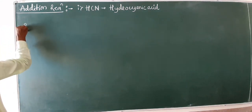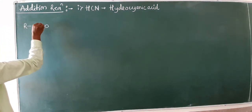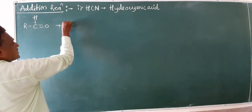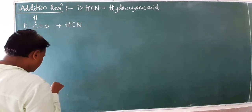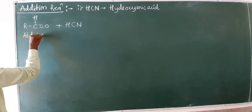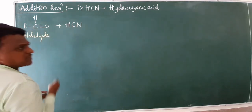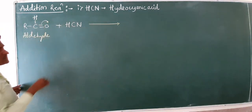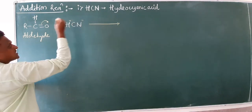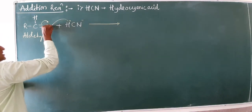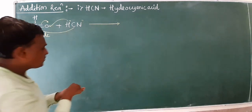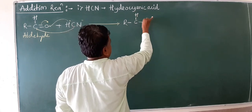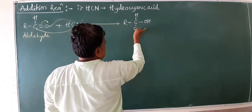We have a very simple addition reaction. When aldehyde reacts with HCN — hydrogen cyanide — this pi bond is cleaved. H⁺ and CN⁻ are generated; the CN⁻ comes to the carbon and H attaches to the oxygen. Our product becomes RCH with OH and CN groups.